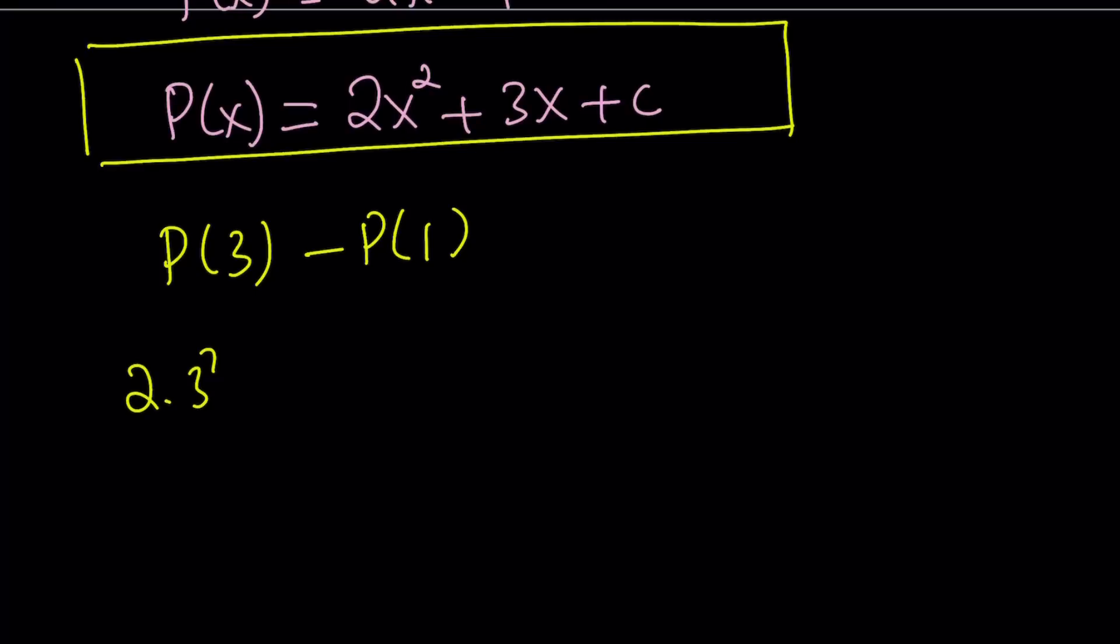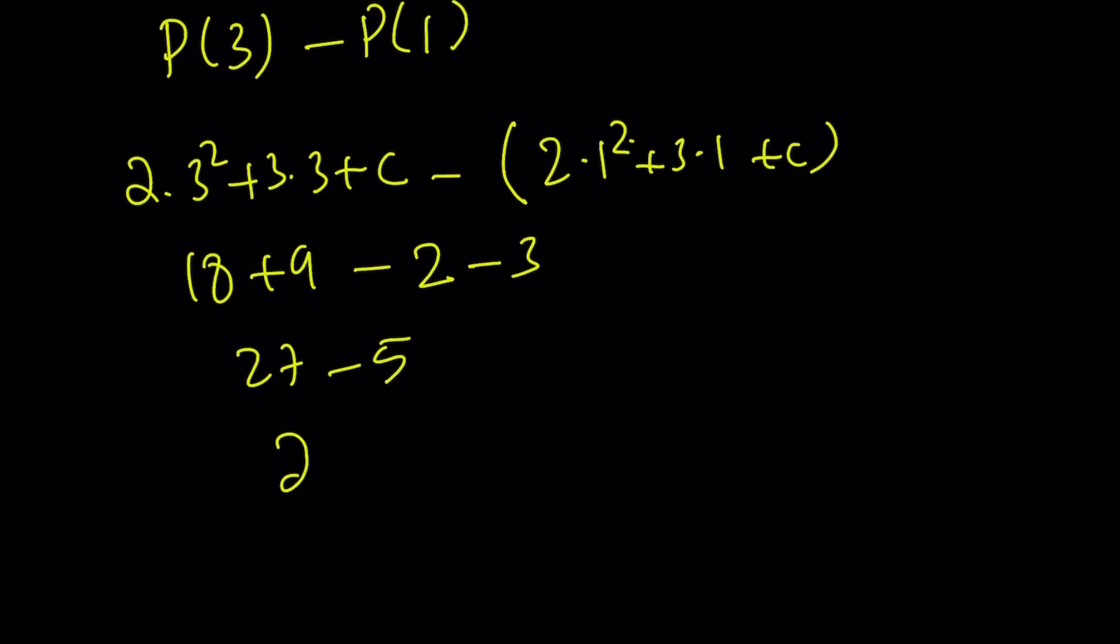P of 3 is 2 times 3 squared plus 3 times 3 plus C. I don't know what C is, but I don't care. You're going to see that C is going to cancel out. 2 times 1 squared plus 3 times 1 plus C. Again, C cancels out. 2 times 9 is 18 plus 9 minus 2 times 1 is 2. 3 times 1 is 3. We're just going to subtract from 27. We're going to subtract 5, and the answer is going to be 22. Again, the value of C didn't really matter here, and at the end, it canceled out.